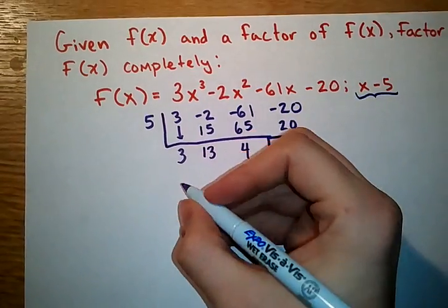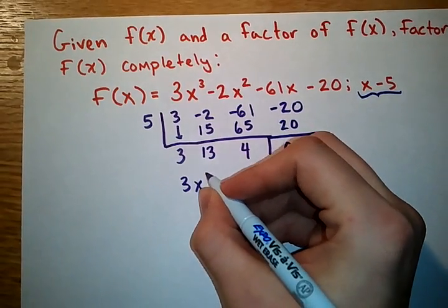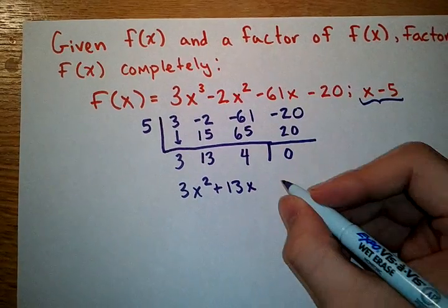What I do know is that my solution here is going to start with an x squared. So these are the coefficients of my new answer. 3x squared plus 13x plus 4.